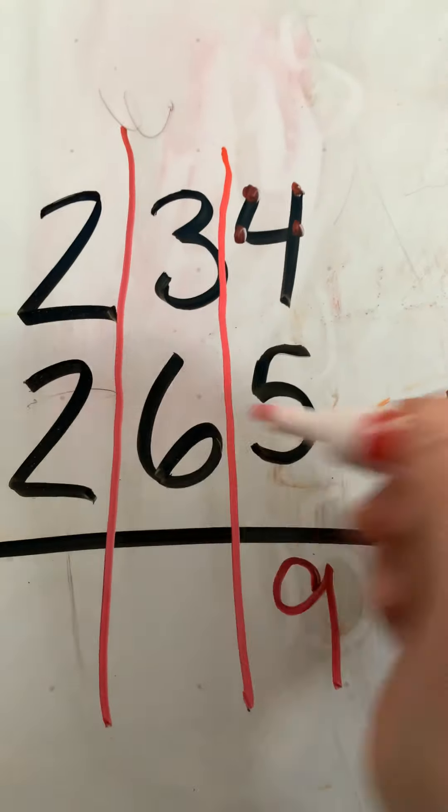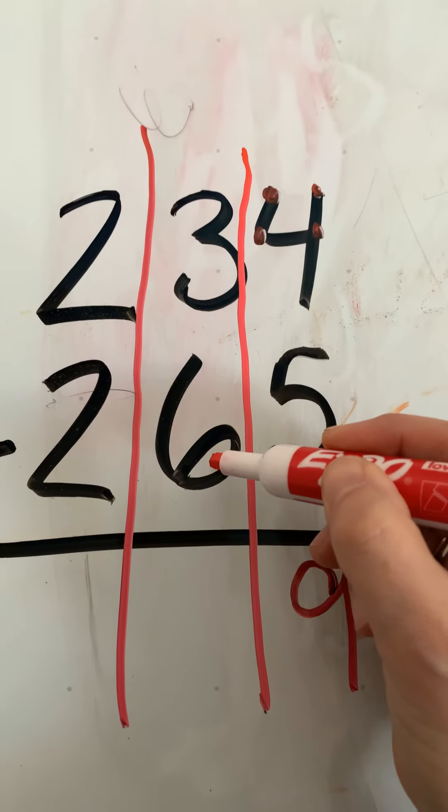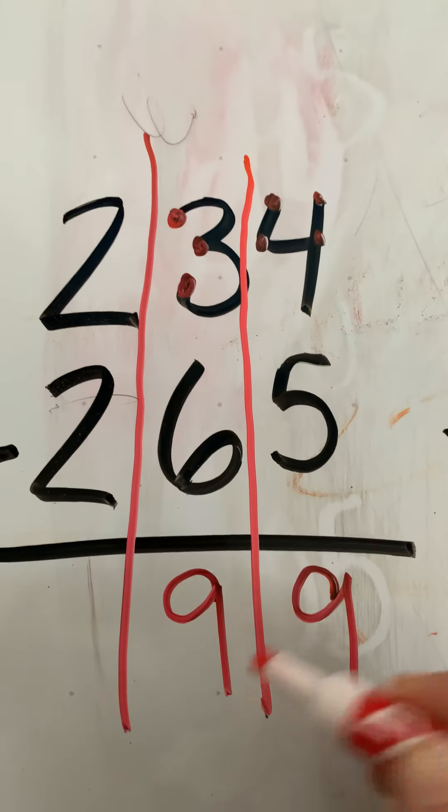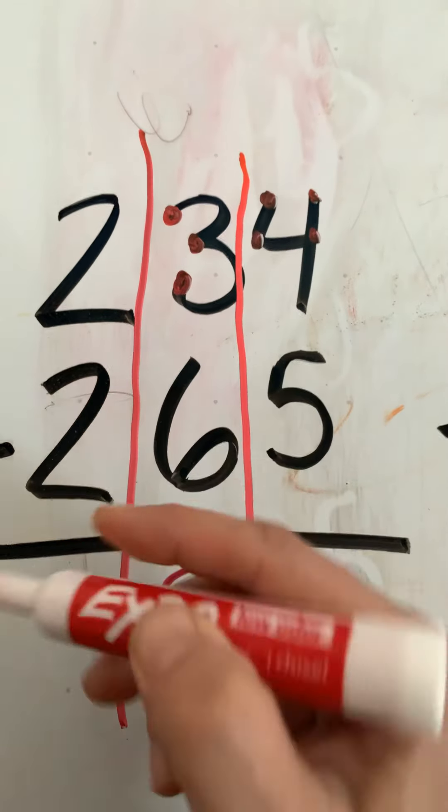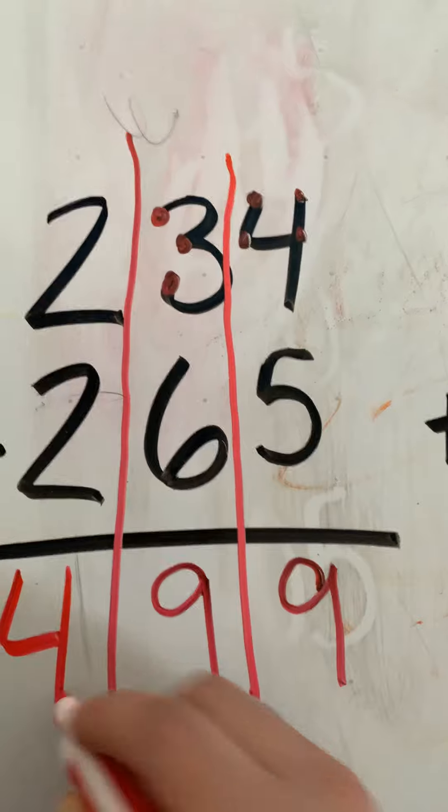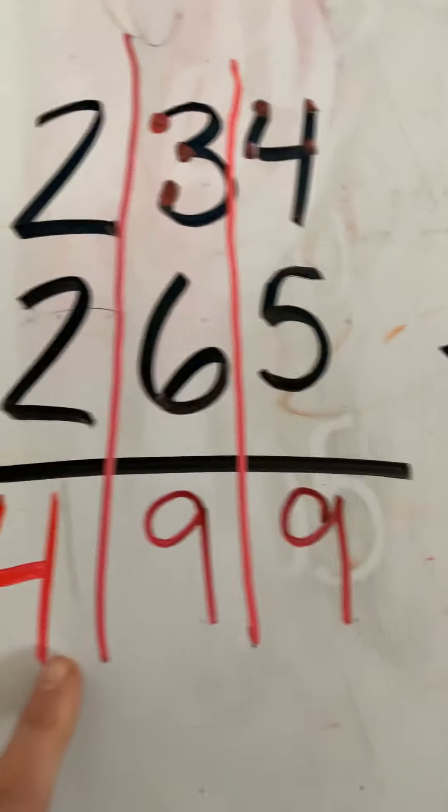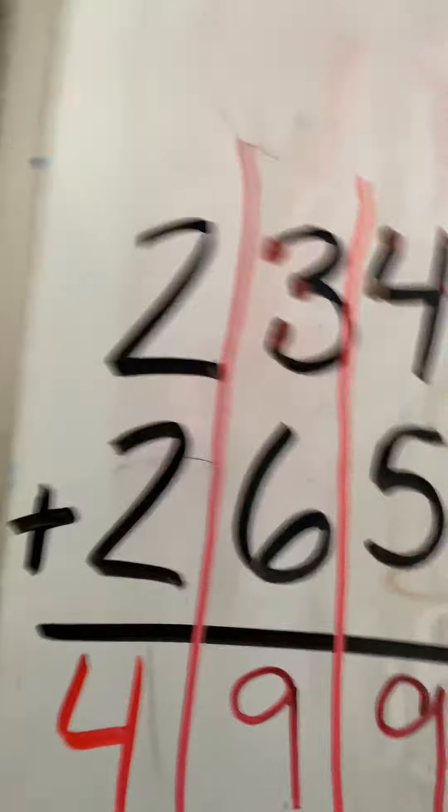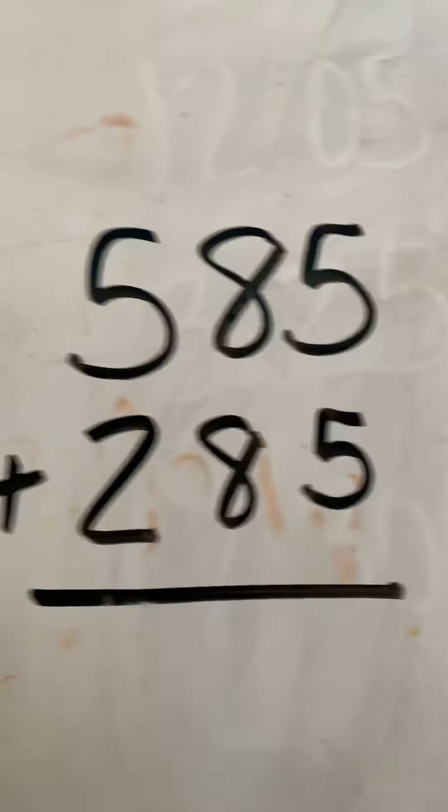Go over. So ready? 6, 7, 8, 9. And then 2 plus 2 equals 4. So our answer is 499. So that was a good warm-up. Now we're going to be doing some carrying addition.